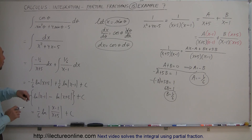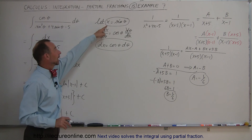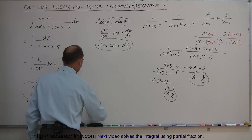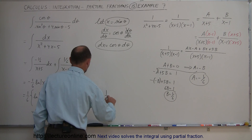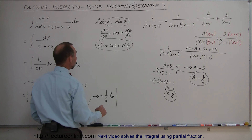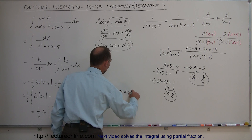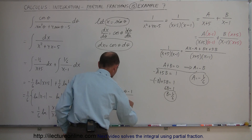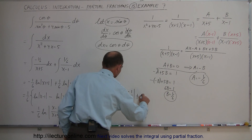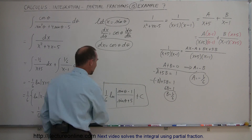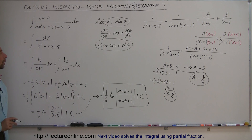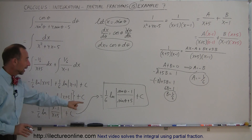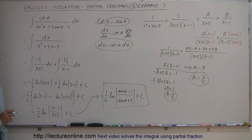Remember that we started with sines and cosines and made the substitution x equals sine of theta. So we substitute back: x minus 1 becomes sine of theta minus 1, and x plus 5 becomes sine of theta plus 5. The final result is 1/6 times the natural log of (sin θ − 1) over (sin θ + 5), plus C. So the approach is: first make the substitution, then use the partial fractions technique, then substitute back. And that's the result.